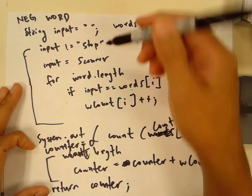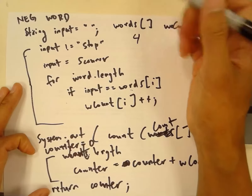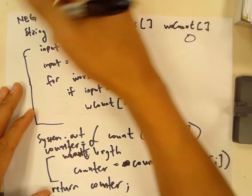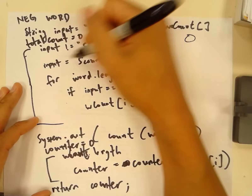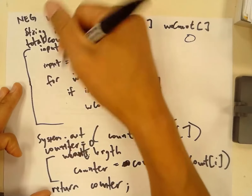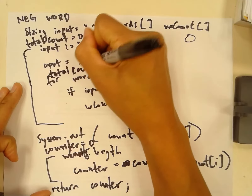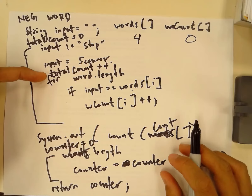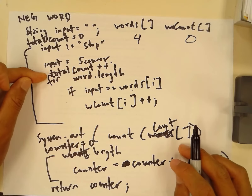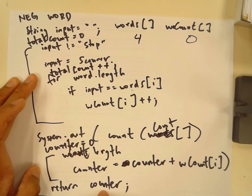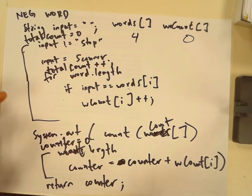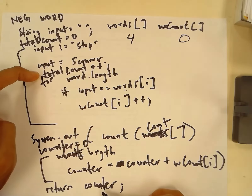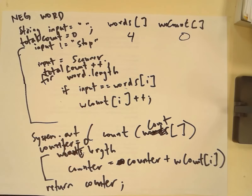We'll use that returned value along with the total number of words entered. To track that, we have a totalCount variable initialized to zero at the top, and every time the user enters a word in the while loop we say totalCount++. That gives us the total number of words entered. Then we divide counter by totalCount to get the percentage of negative words that were entered by the user.